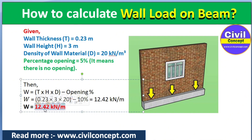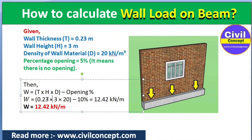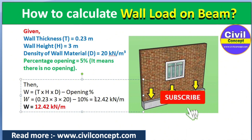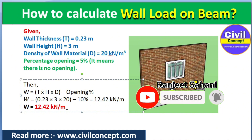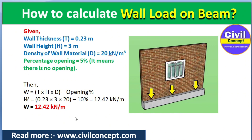After putting in all the values — T is 0.23 m, H is 3 m, density is 20 kN/m³, minus 10 percent for the opening — you will get 12.42 kilonewton per meter. So the final load is 12.42 kN/m.